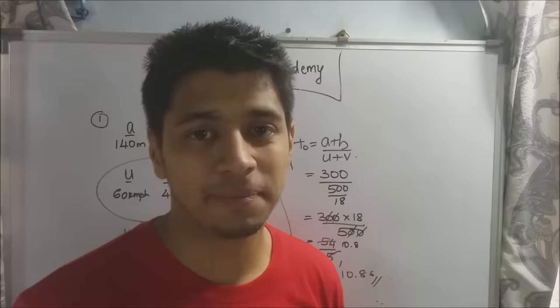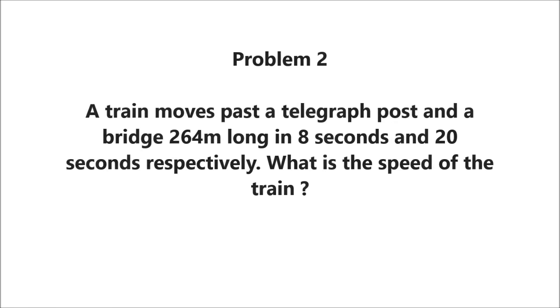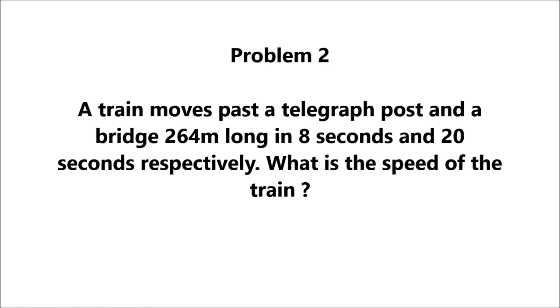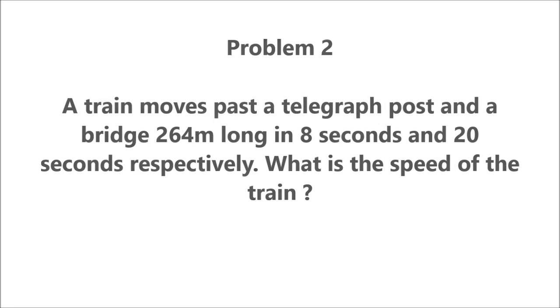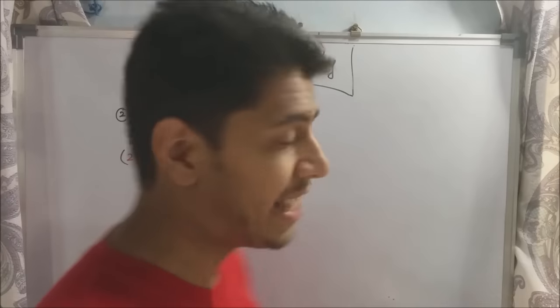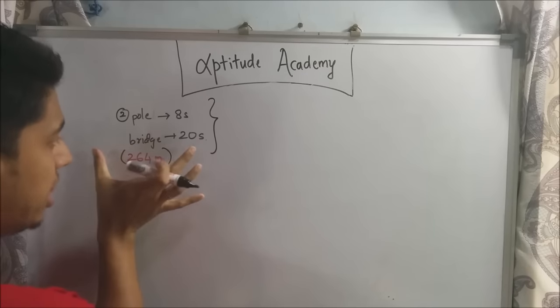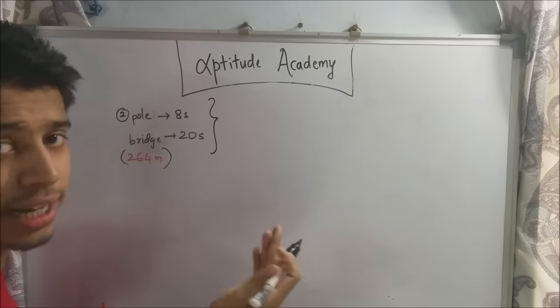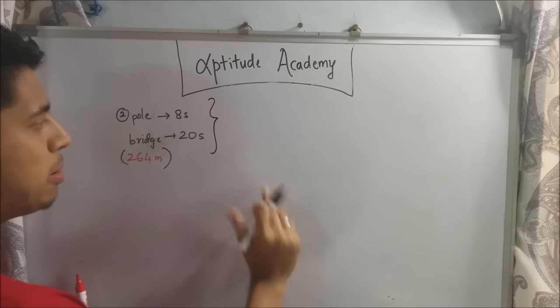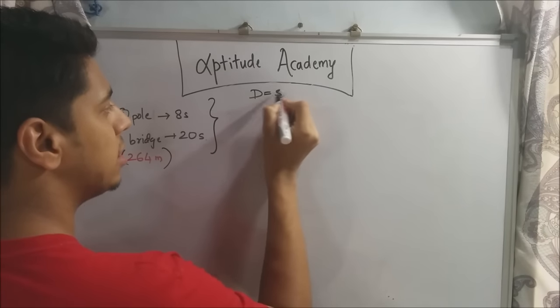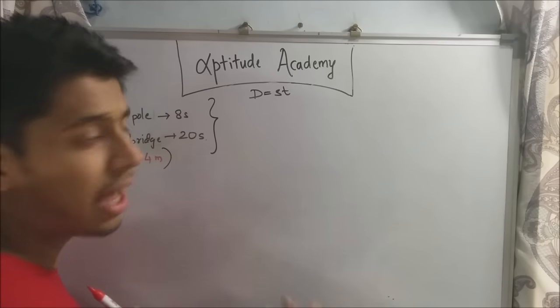Let's go on to the second problem. Problem 2. A train moves past a telegraph post and a bridge 264 meters long in 8 seconds and 20 seconds respectively. What is the speed of the train? Alright, now for the second sum they have said that the train crosses a pole in 8 seconds and it crosses a bridge in 20 seconds. They have also said that the length of the bridge is 264 meters. Now how you solve this type of problem is you apply the distance equation d equals st to both these scenarios. You get two equations and then you solve them.